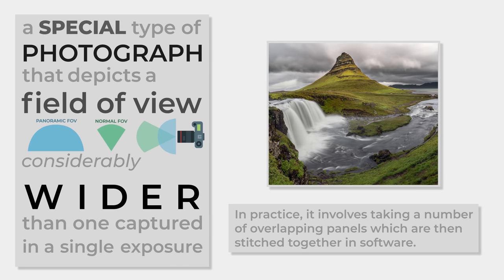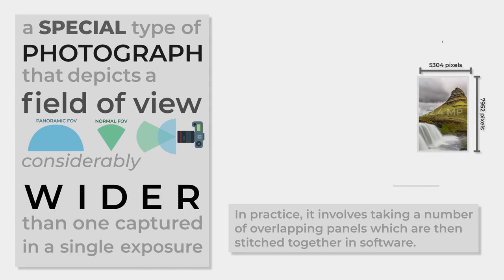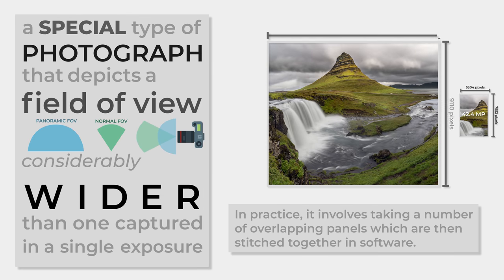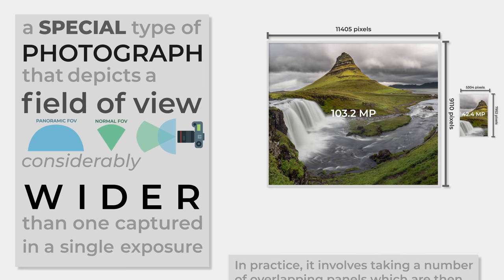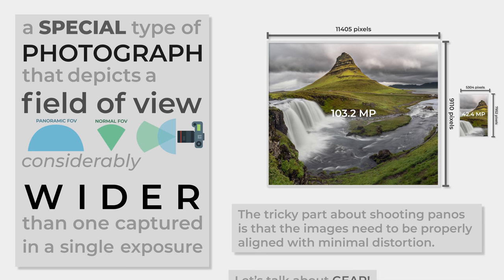This wider field of view is not only great for capturing more of your scene, but because you're taking multiple full-resolution photos and stitching them together, the resulting panorama should have massive resolution — sometimes upwards of 100 megapixels — which is great for large prints and other applications. The tricky part is that all the panels must be properly aligned and have sufficient overlap to make the stitching process easier.